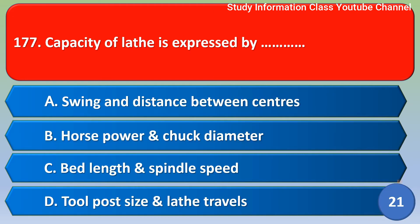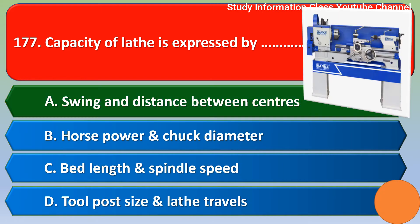Next question: capacity of lathe is expressed by — swing and distance between centers, horsepower, unchecked diameter, bed light and spindle speed, tool force, size and plate travels. The correct answer is option A: swing and distance between centers.